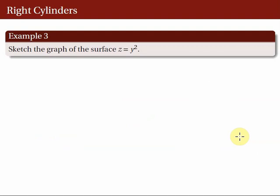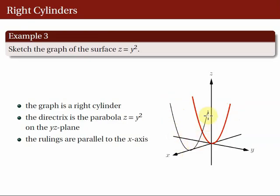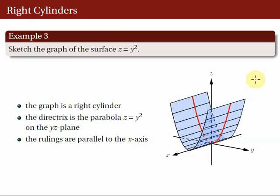Another example: sketch the graph of the surface z = y². It should be immediate that the graph of this equation is a cylinder because it involves at most two variables. To sketch the graph of this right cylinder, we begin by sketching the graph of z = y² on the yz-plane. This is a parabola on the yz-plane. Since the missing variable is x, we translate the generating curve or the directrix along the x-axis. Then we draw the rulings parallel to the x-axis. So here's a picture of the right cylinder.